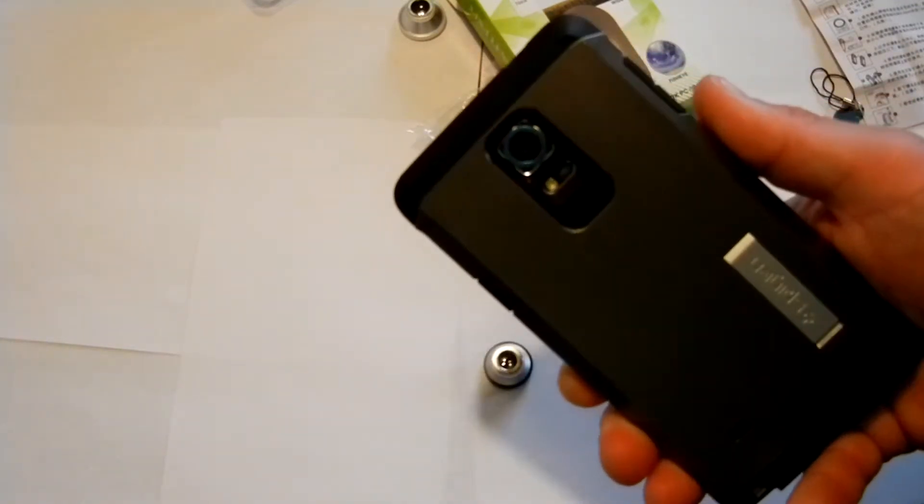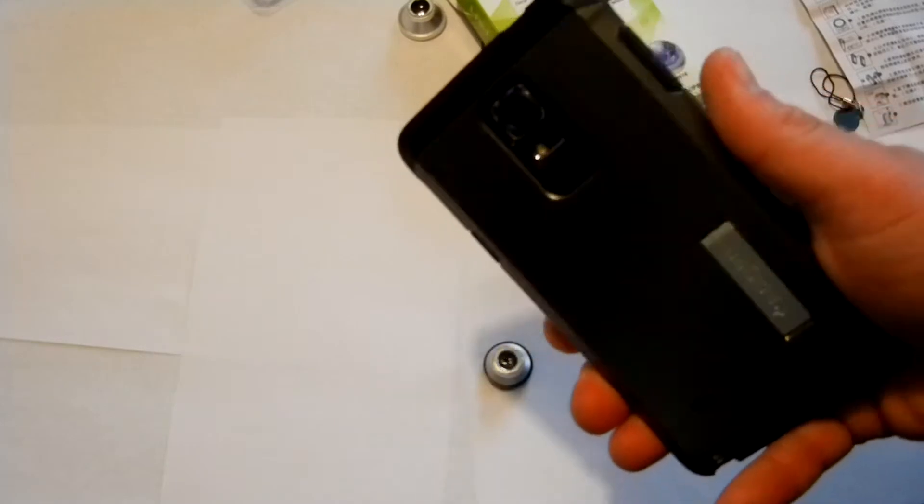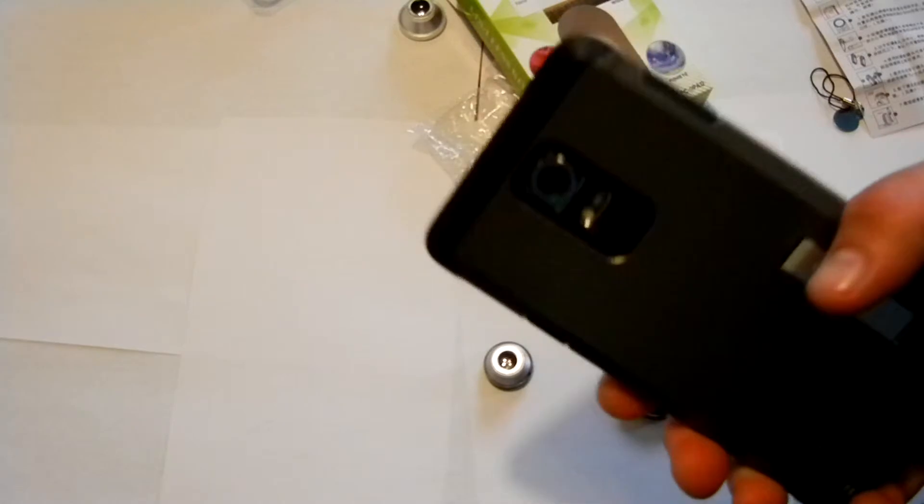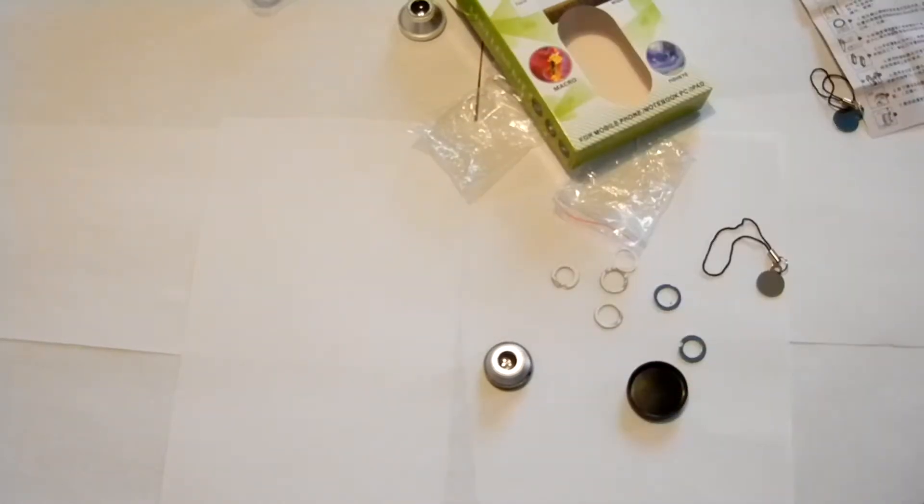Okay, so you can see how I've got the ring on there now. It's not moving around at all. It looks pretty stable. So what I'm going to do is I'm actually going to test to make sure the optical image stabilization still works on this because I don't want it to be interfering with it.